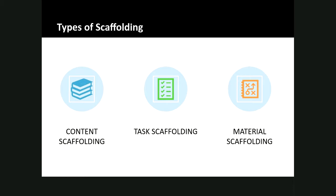Another type of scaffolding is task scaffolding, where the instructor outlines the steps in a process and models those steps for students while discussing their thought process aloud. The process of task scaffolding involves the instructor fully demonstrating and explaining the process step by step, and then slowly handing over the process to students to accomplish step by step on their own. The instructor models each individual step, narrating what they're doing, and then students practice independently as the instructor provides guidance as needed.